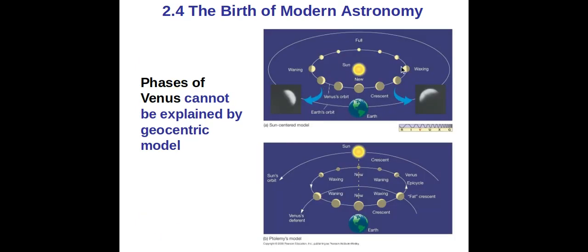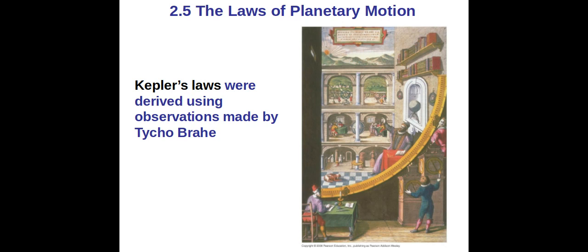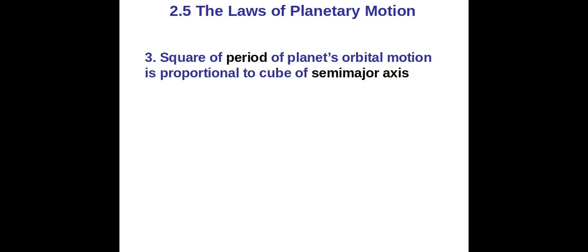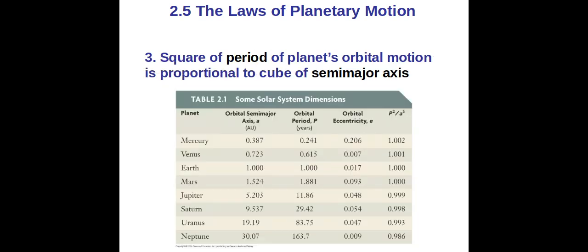There's the same picture of Venus going around, so that was also used as a proof of the heliocentric model. Kepler and Brahe, once again the ellipse. Kepler's laws.